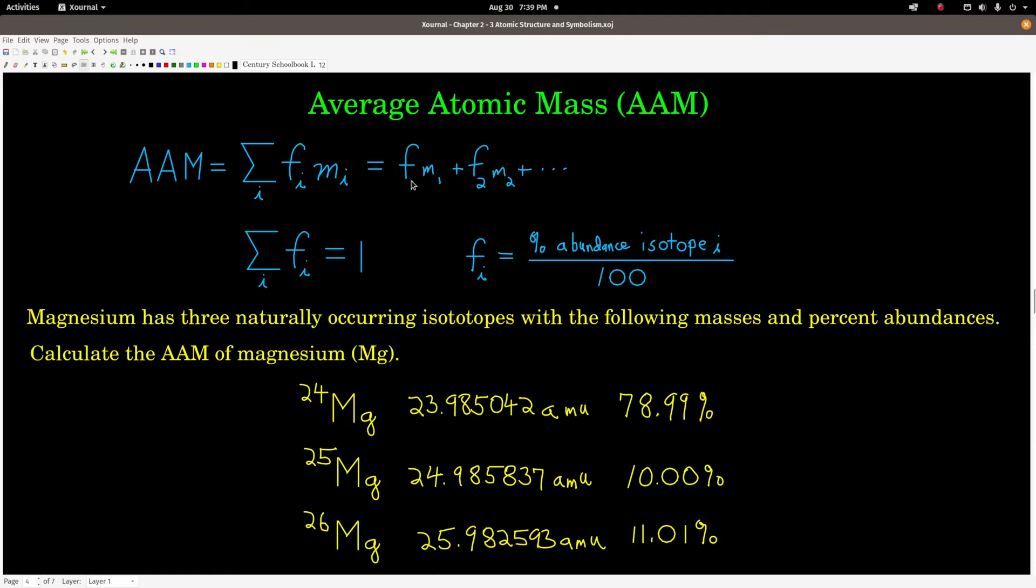For any element, if we know the makeup, what fraction or what percent of each isotope is in that element, and the mass of each element. So this formula up here, this AAM stands for average atomic mass. And it says that the average atomic mass is a sum, this sigma is a sum, of each fraction times each mass of each isotope. So for example, if there's two isotopes, it would be the fraction of the first times its mass, plus the fraction of the second times its mass. If there were 3, it would be plus F3, M3. Here the fractions are just a percent divided by 100.